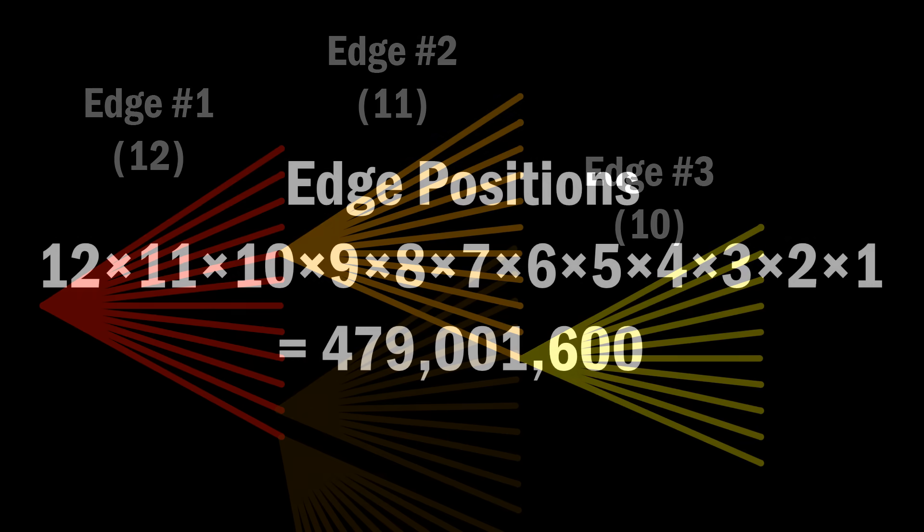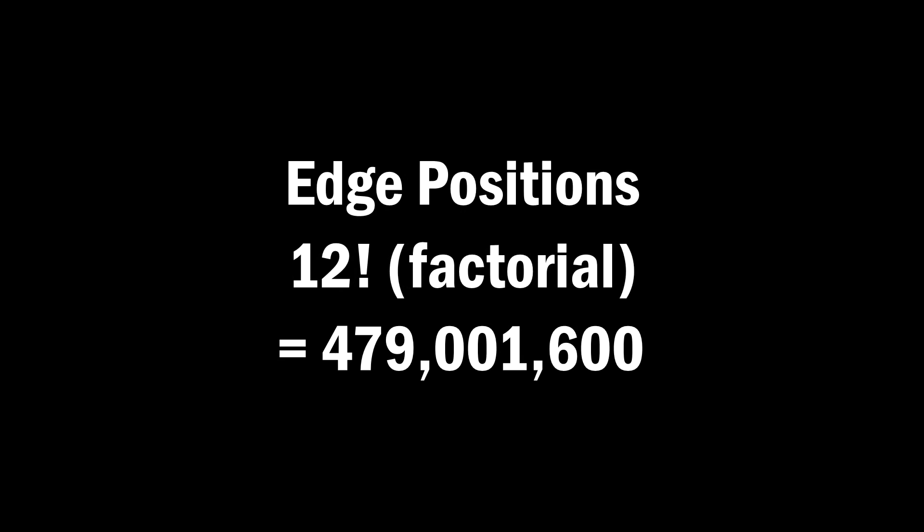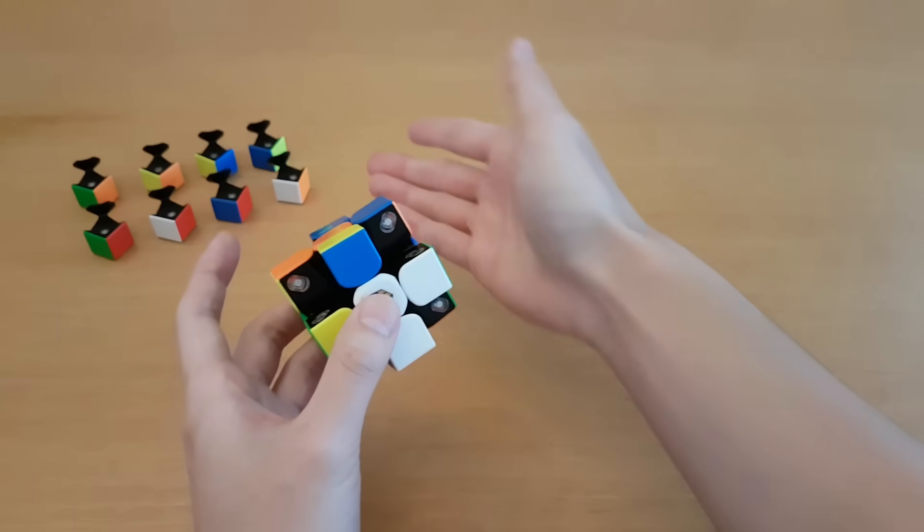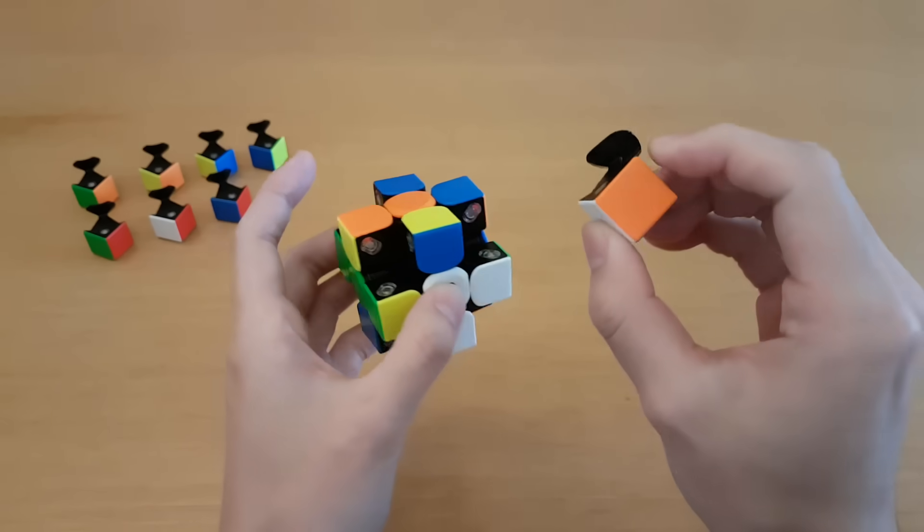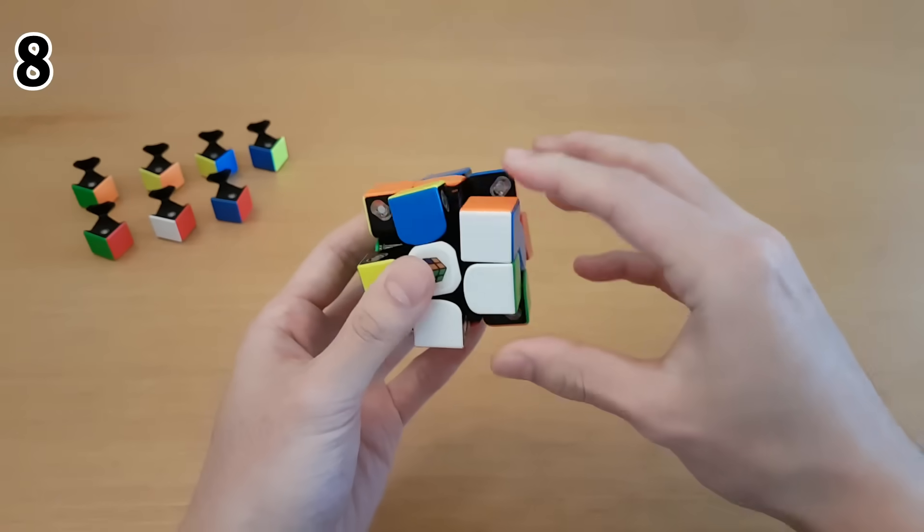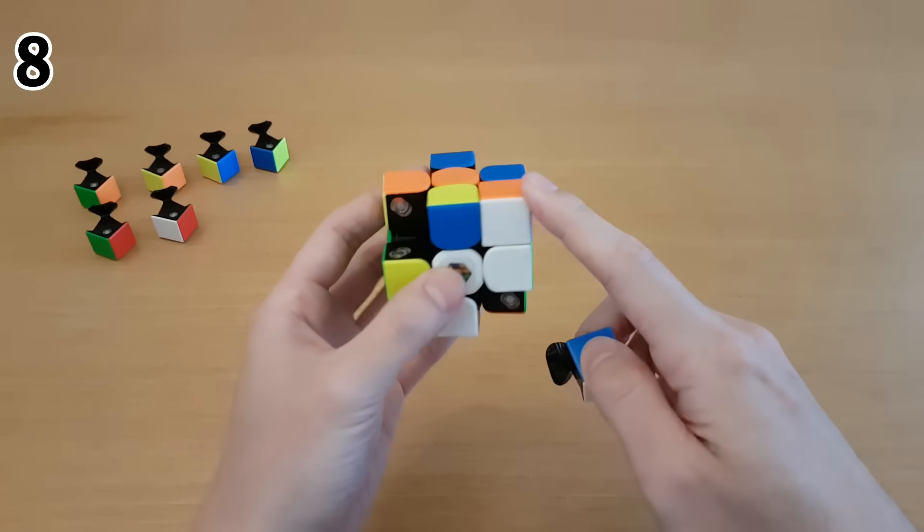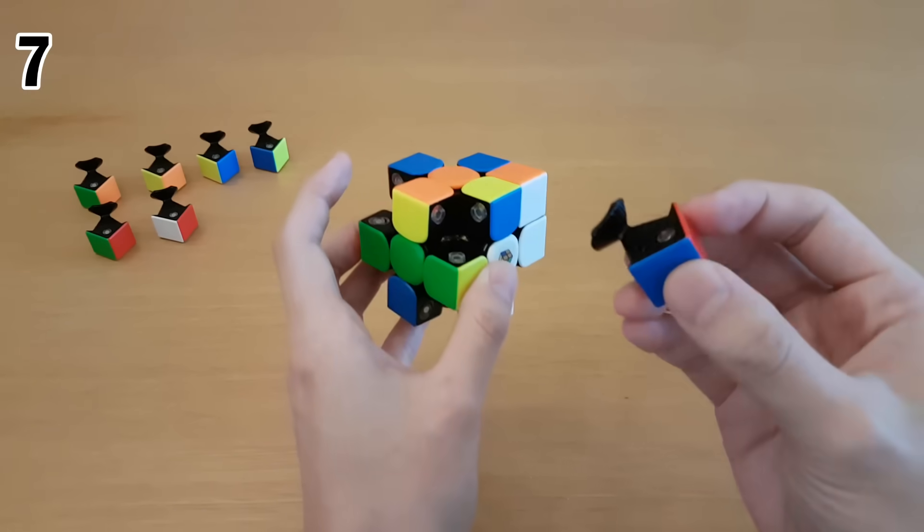The total number of branches will be gigantic, and we can simplify this all down to 12 factorial, which just means multiply 12 with every whole number smaller than it. For the corner pieces, it's the exact same idea. I have 8 places that I can put the first corner piece in, so I'll just pick one of those spots. And for the next corner piece, one spot is taken, so I only have 7 spots remaining I can put it in.